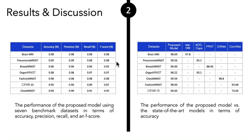For the third experiment that we did, we used the seven benchmark datasets that I explained before with evaluation metrics like accuracy, precision, recall, and F1 score to train on our model. For Brain MRI, we got 98. For Pneumonia MNIST, we got 99. For Breast MNIST, we got 96. For CIFAR-10, we got 90. For Chest MNIST, we got 99, and so on for all the table.